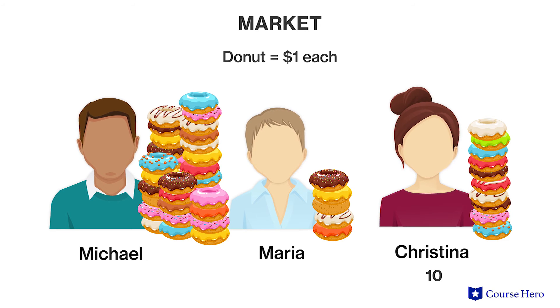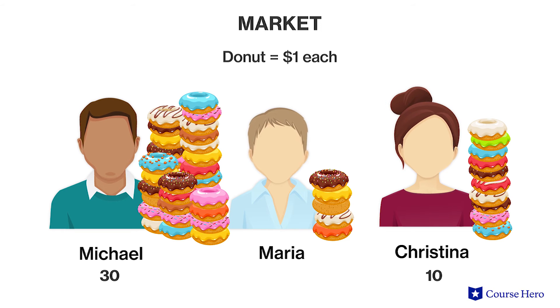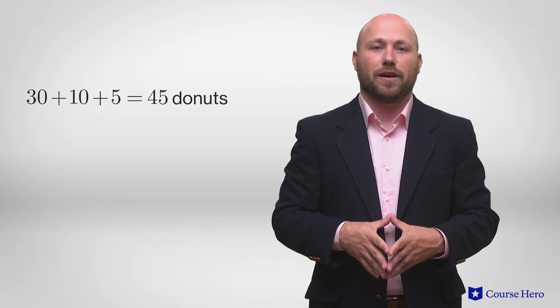If Christina will buy 10 donuts at a dollar per donut, then Michael will buy 30 at that price and Maria will buy five. The number of items demanded by all three persons taken together is the market demand, and at $1 each the quantity demanded is 45 donuts. 30 plus 10 plus 5 is how we get the 45 donuts.